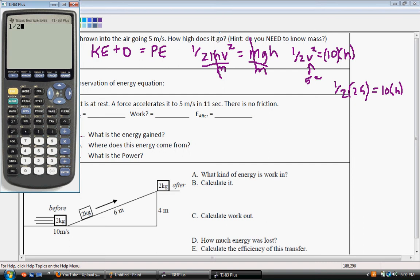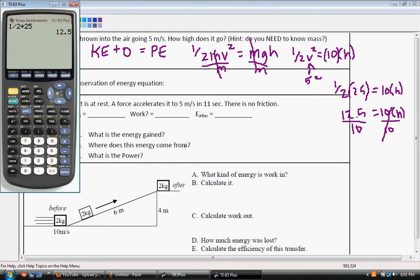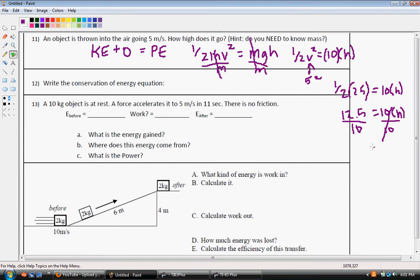1 half times 25 is 12.5, and then we have 10 and the height. So, then we divide both sides by 10 to get our height, this side cancels out, and 12.5 divided by 10 is 1.25. So, it's going to go 1.25 meters in the air, and that is our height.